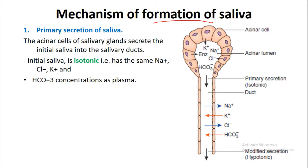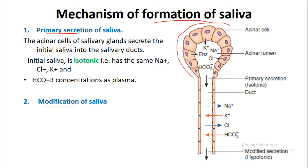There are two phases in the mechanism of formation of saliva: the first is the primary secretion of saliva, and the second is modification of the saliva. In this image you can see the salivary gland with the acinar cells and ductal cells which form the ducts of the salivary gland.